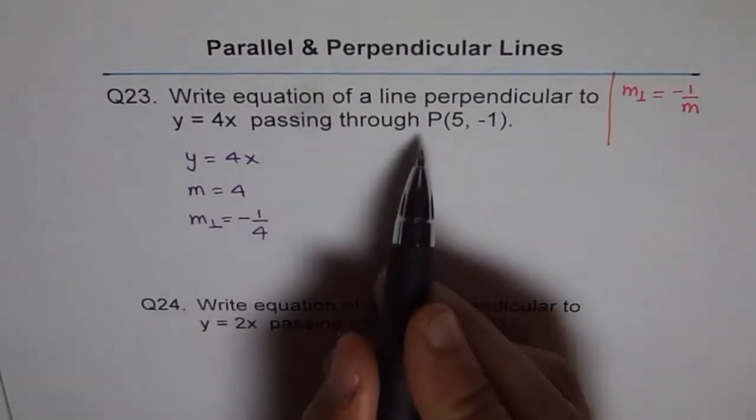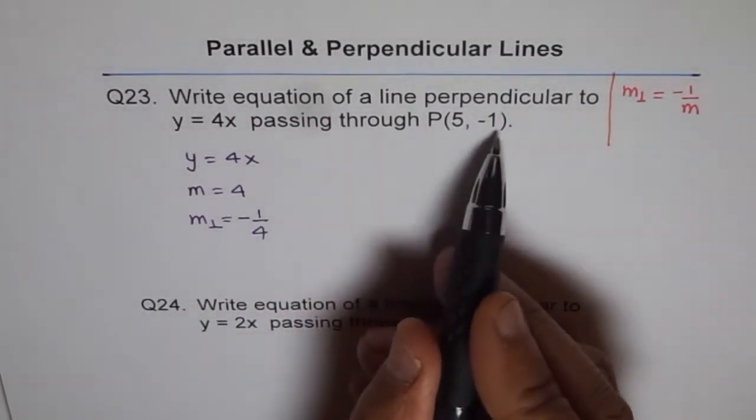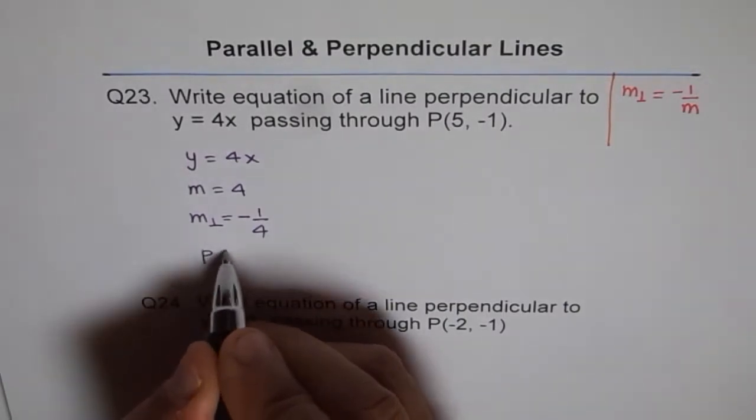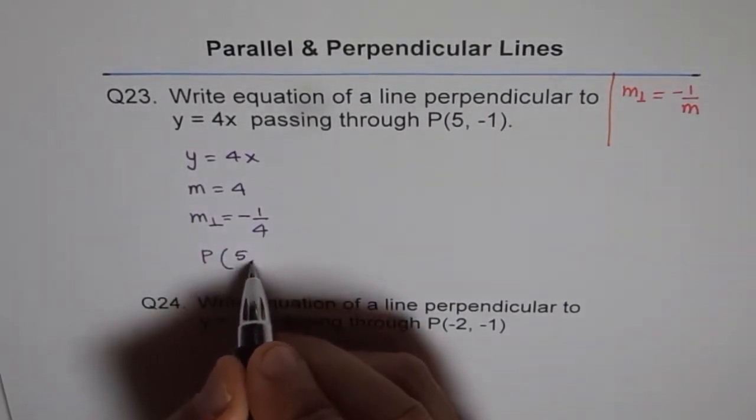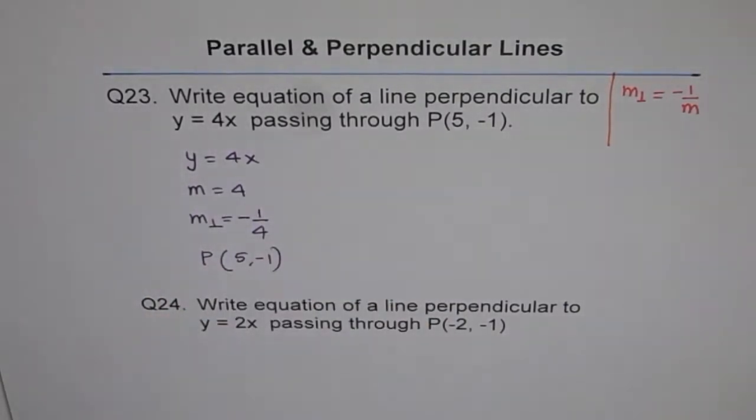Secondly, we also know it goes through point (5, -1). Now with this, we should be in a position to write down equation of our line.